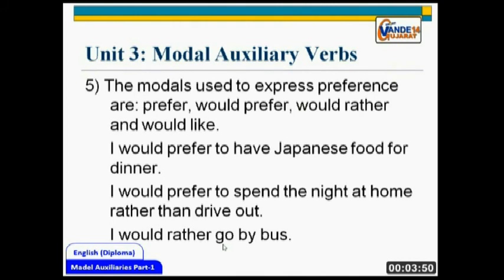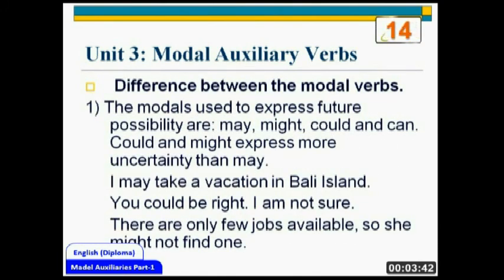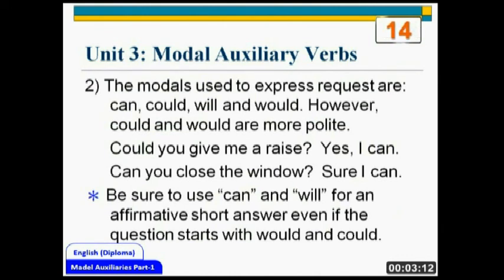In all, we have seen all the modal auxiliaries in detail. The words for future possibility are may, might, can and could — use may and can for more possibility, and might and could for more uncertainty. For request: can, could, will and would — but could and would are more polite; when answering, use 'can'. For permission: can, could and may — use may for asking, can for giving; do not use could for giving or refusing. For advice: could, might, should, must, have to, had better, and ought to.